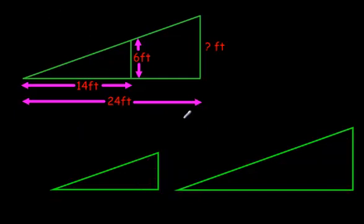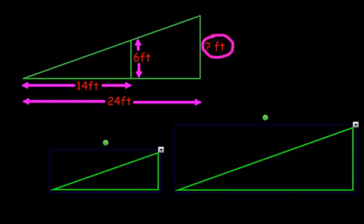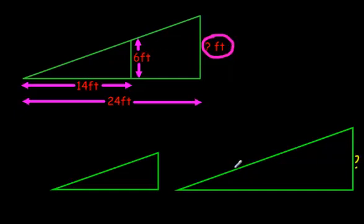Alright. So, let's deal with this question here. The nice thing about math is you can see the question, it's right there. They want to know how tall this side is right here. So we've got the question mark right there, and we know that this is 24 feet across. We know this one is 14 feet, and the height of this one is 6 feet.